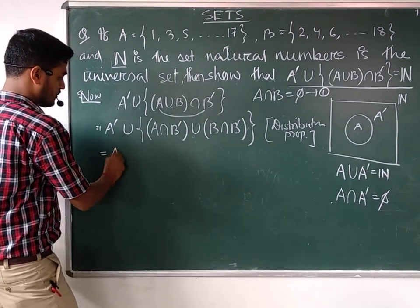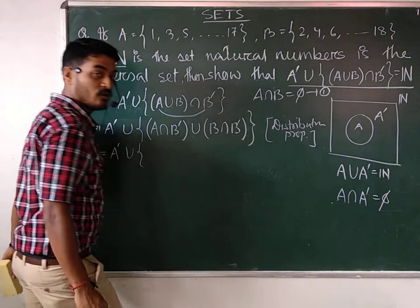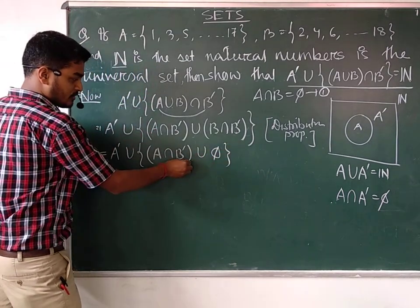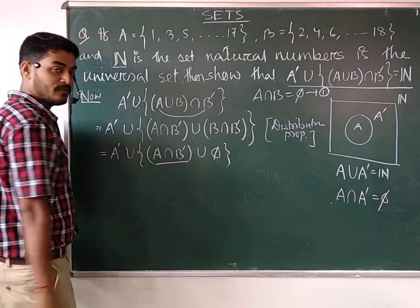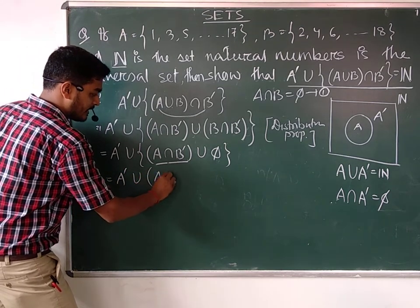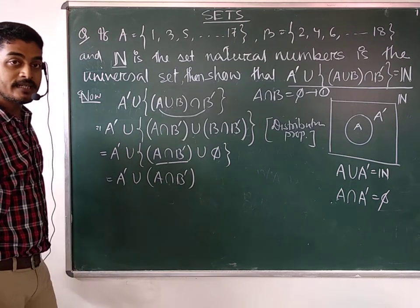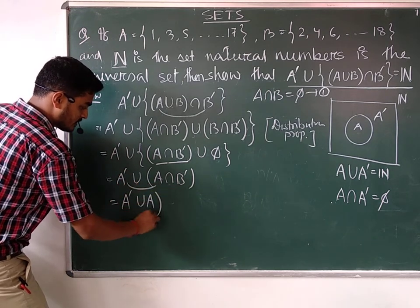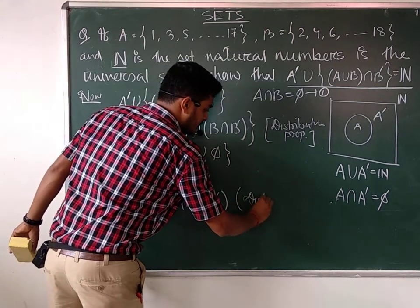The next step: it will be A complement union B intersection B complement, union phi. So the A complement union piece and the B intersection B complement piece. We have an expression — whenever an operation lies inside the bracket and the outer operation is different, we will apply the distributive property here once again. So according to the distributive property, it will be A complement union B complement, and then we will apply the distributed property.